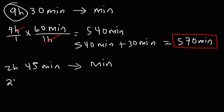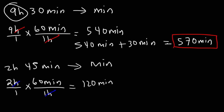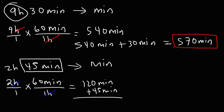For the next example, let's convert 2 hours into minutes by multiplying by 60. 2 times 6 is 12, so 2 times 60 is 120. Then we add the 45 minutes: 120 plus 45. 5 plus 0 is 5, 2 plus 4 is 6, giving us a total of 165 minutes. That's how you convert a composite problem with hours and minutes into minutes.